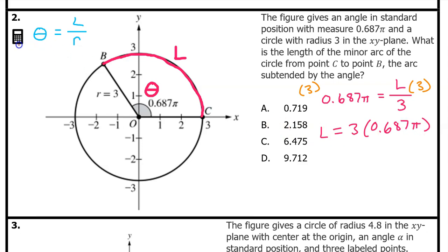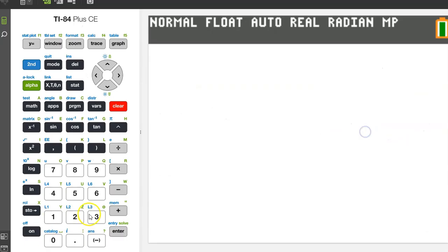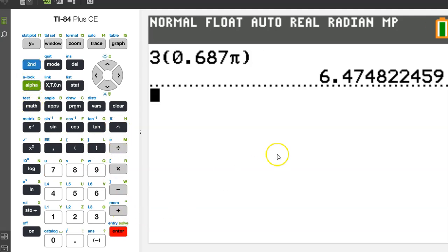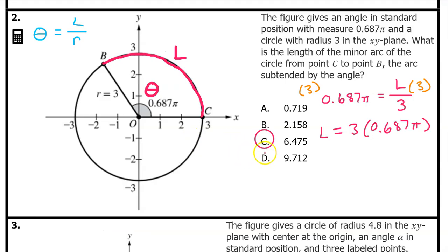This problem is calculator active, so we can simply put this expression in the calculator. That was 3 times 0.687π, 6.475. They will probably round. So the answer is C.